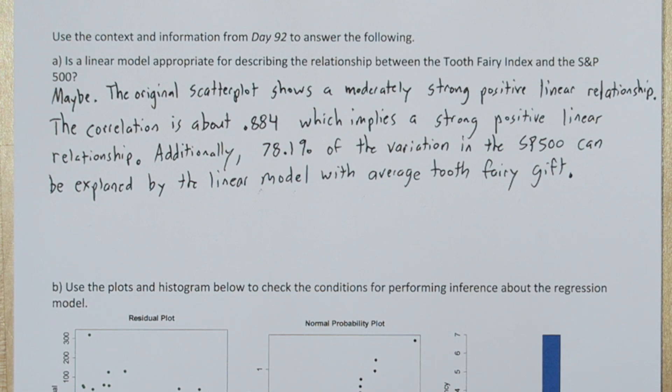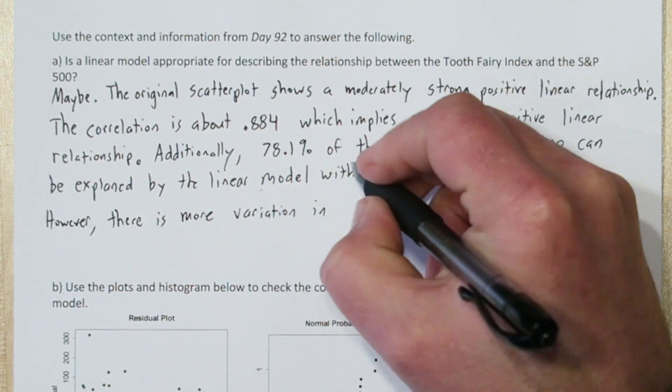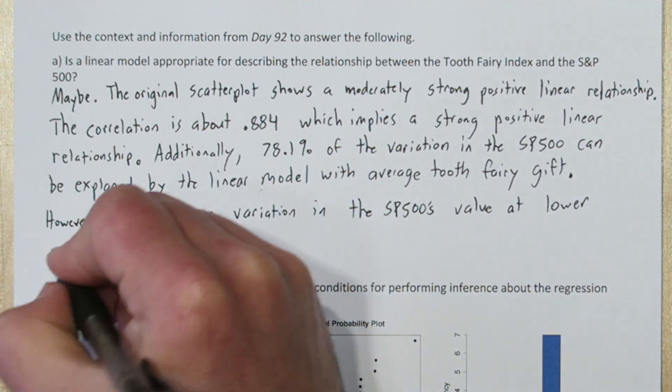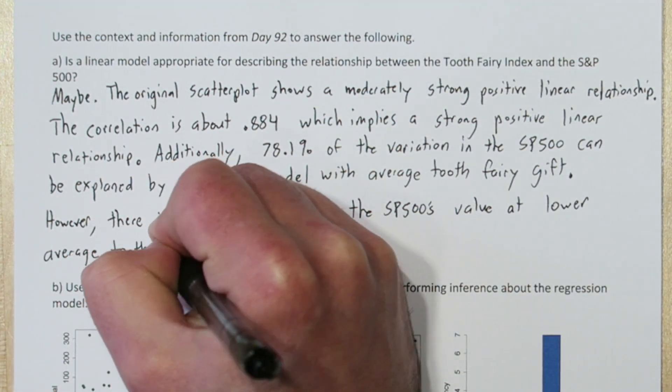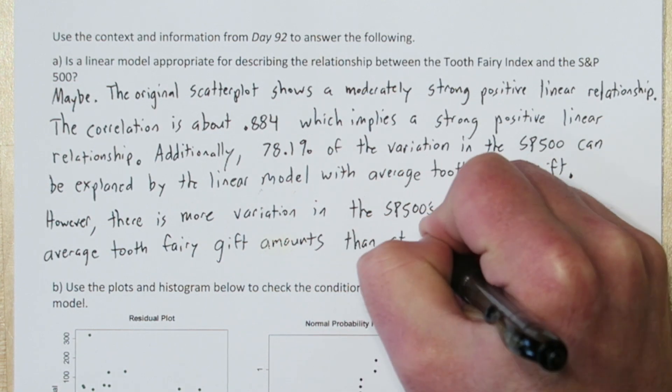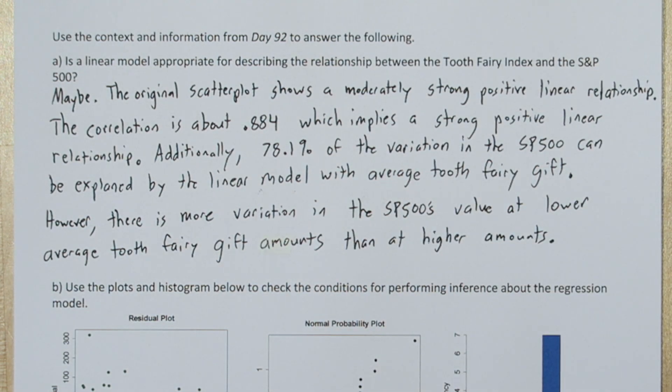There is one red flag though. There's more variation in the S&P 500's value at the lower average Tooth Fairy gift amounts than at the higher amounts. Now, this might just be a result of not having enough data, and when more points are added the variation will look equal throughout the entire domain. But we'll talk about this more in Part B.